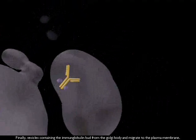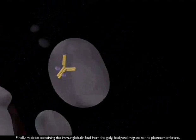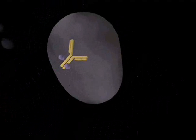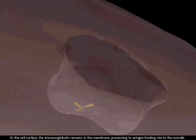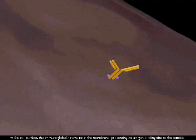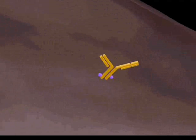Finally, vesicles containing the immunoglobulin bud from the Golgi body and migrate to the plasma membrane. At the cell's surface, the immunoglobulin remains in the membrane, presenting its antigen-binding site to the outside.